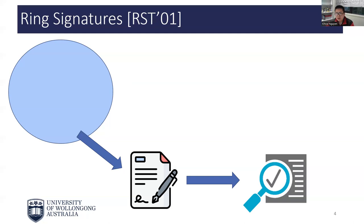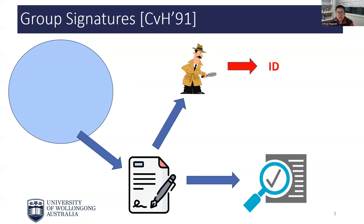If we look for a primitive offering both anonymity and accountability, then the most well-known example is group signatures. In group signatures, we have an opening authority whose secret key can be used to trace any valid signature and recover the identity of the signer. This authority is supposed to take action only in case of disputes. But if this authority is corrupted, then it can open all signatures at will, and in that case there is essentially no privacy for users. There have been several attempts to restrict the power of the opening authority in group signatures, such as traceable signatures, group signatures with message-dependent openings, or accountable tracing signatures. However, in these systems there is always a party who can break a signer's privacy without any consent.